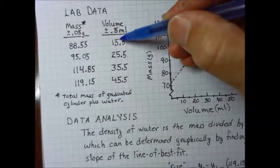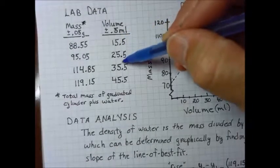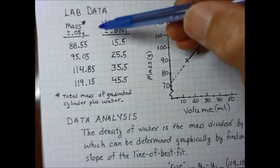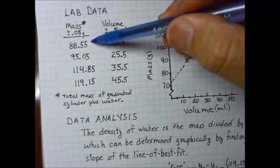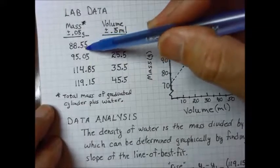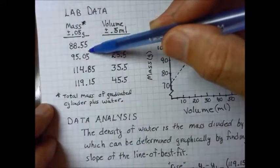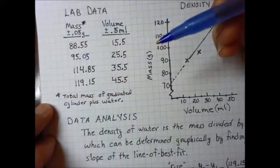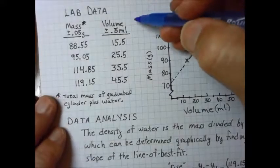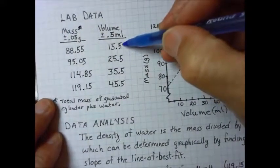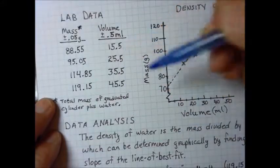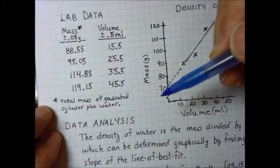I'm also going to be looking that you have provided the proper number of significant figures. So if you are recording mass on the triple beam balance, I'm looking for two digits to the right of the decimal for each and every one of your measurements. Likewise, for the volume, I'm looking for three significant figures in each of these, one digit to the right of the decimal.